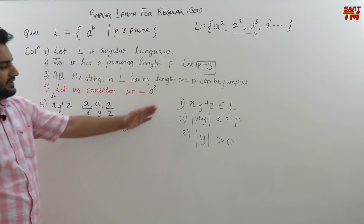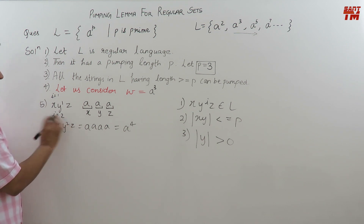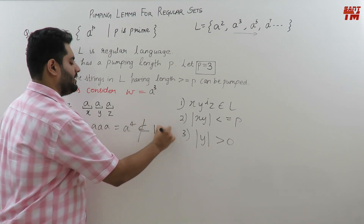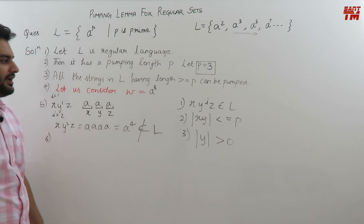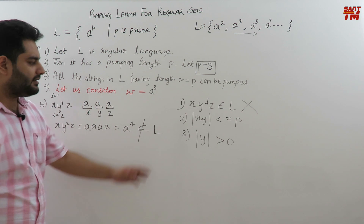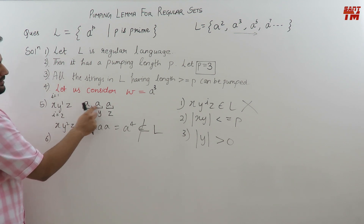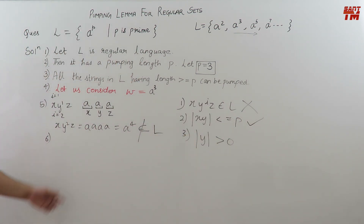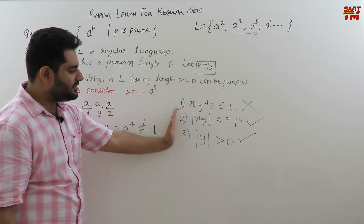Point number 6: we check if the three conditions are true simultaneously. X·Y^i·Z should belong to L — but X·Y squared·Z is a raised to the power 4, which does not belong to L because 4 is not a prime number. Condition 1 fails. Second condition: the length of XY should be less than or equal to the pumping length. The length of XY is 2, and 2 is less than or equal to 3 — condition 2 is satisfied. Third condition: Y should have length greater than 0 — Y has length 1, which is greater than 0, so condition 3 is also satisfied.